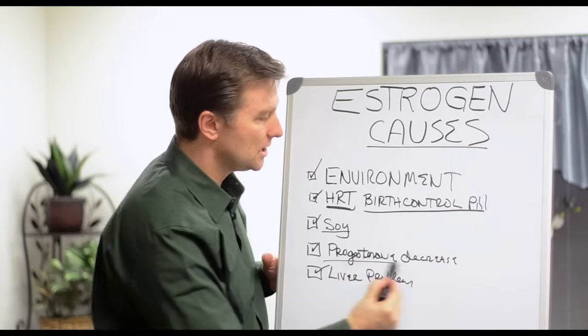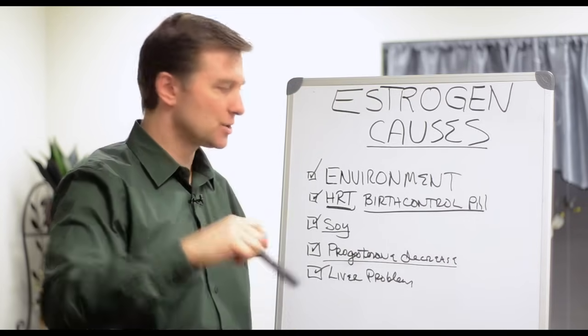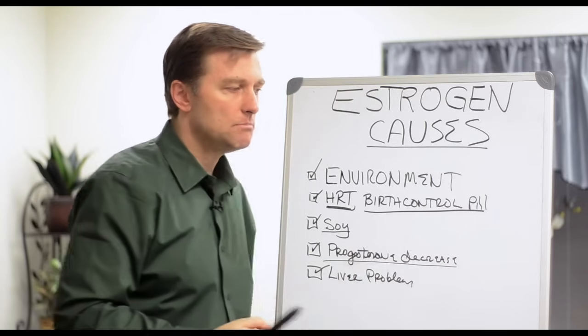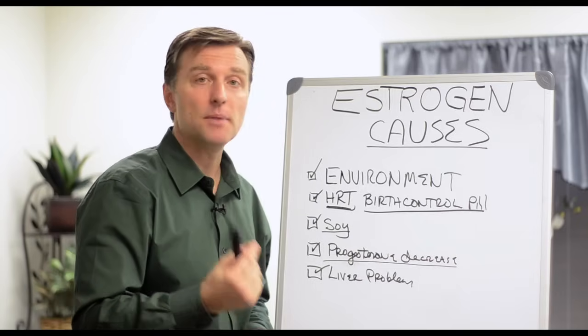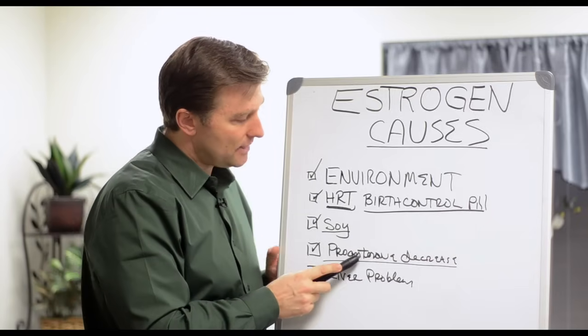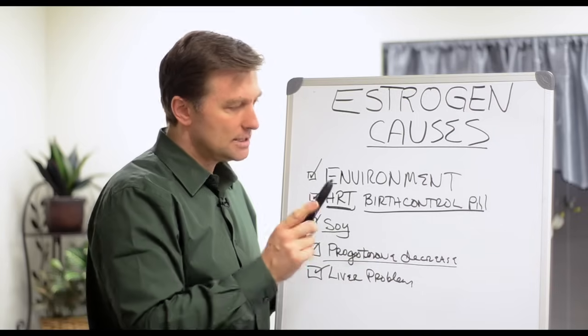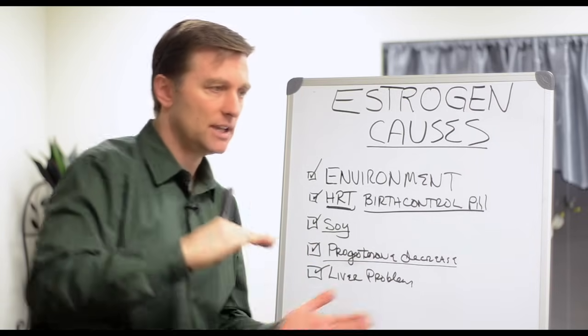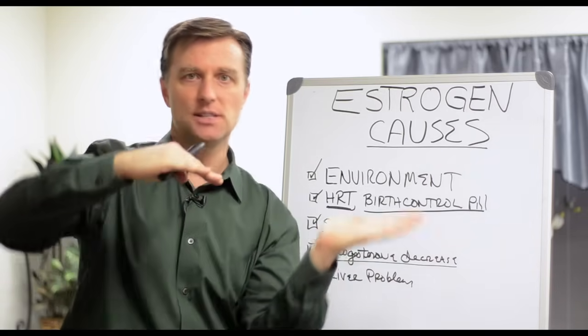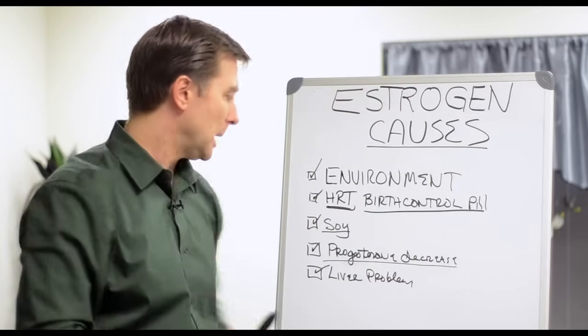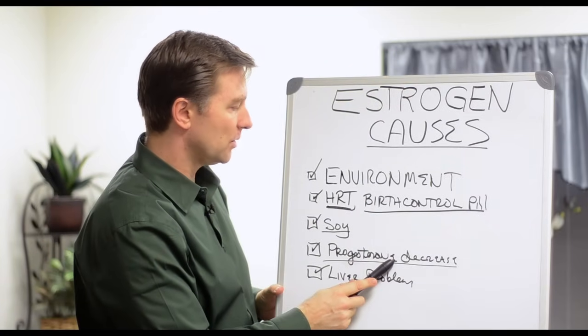Okay, progesterone decreases. We talked about that in the last section. Really, when you start losing your period around perimenopause, you can then have a problem with decreased progesterone and relative increase estrogen because they work on a reciprocal basis. So that can also be one of the problems that we're dealing with.